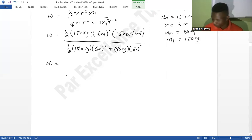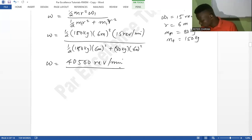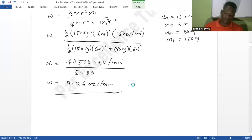So we punch that one. The top part is giving us 40,500 rev per minute, and the down part it's going to give us 5,580. And once we divide that, we get about 7.26 rev per minute. So that is how you get to find that one. So simple, right?